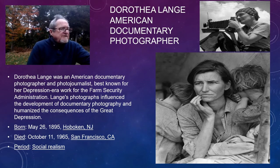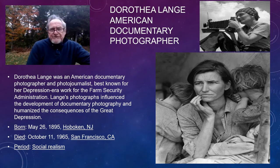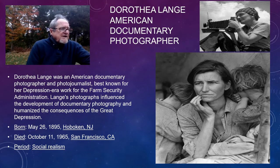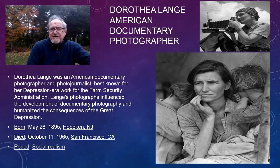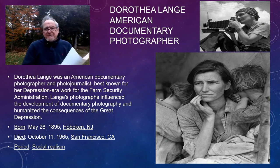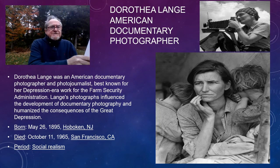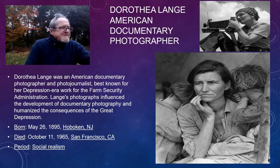The subject of the photo is Florence Owens Thompson. She's 32 years old at the time of this photograph and has six kids. She says, 'I worked in hospitals, I tended bar, I cooked, I worked in the fields — I've done a little bit of everything to make a living for my kids.' She received no money for being the subject of this photograph. It wasn't until maybe 30 years later that they even found out who the person was in the photograph. This is our last example of the literary device ekphrasis.